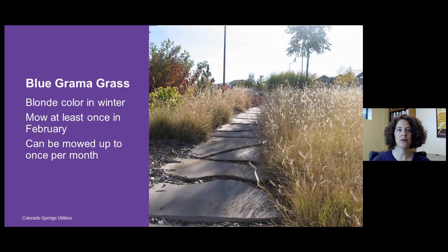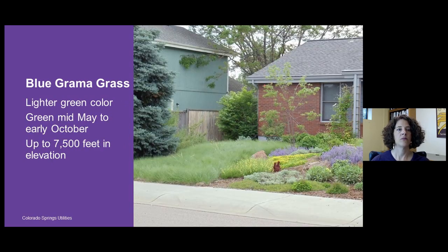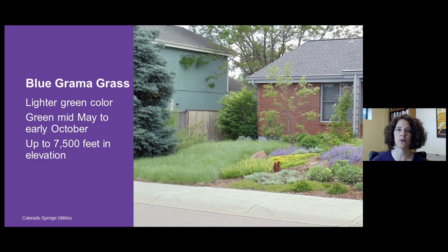Blue grama grass has a light blonde-yellow color in winter and needs to be mowed less often than a traditional lawn. It's best to leave it a little longer — you can mow it as little as once in February to remove dead material, or up to once per month for a neater look. It has a green period from mid-May to early October and can work at elevations up to about 7,500 feet in Colorado.